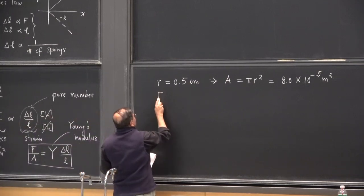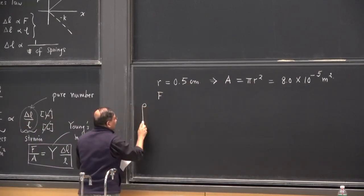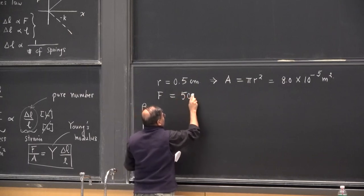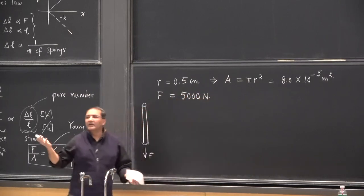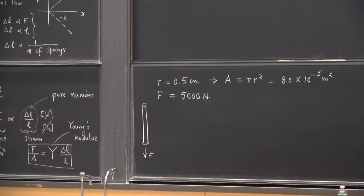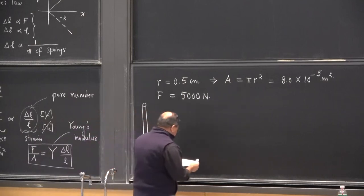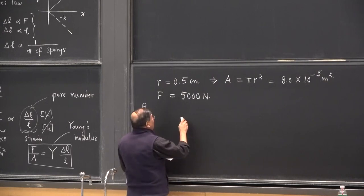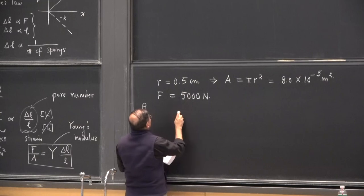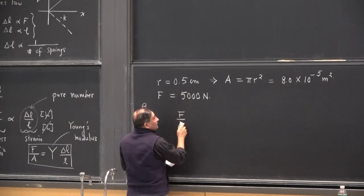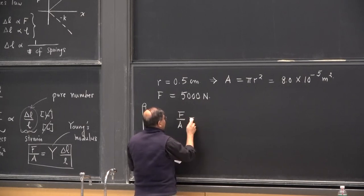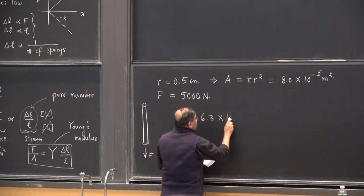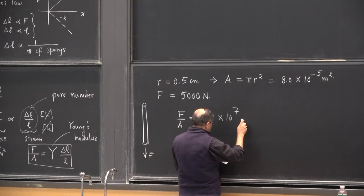Suppose you apply a force — this is a wire, and you apply a large force: 5,000 newtons, which is roughly 500 kilograms. Now let's see what delta L would be for stainless steel. Given what I know, force per unit area — the force is large, the unit area is small, so a thin wire is supporting a large force — the force per unit area comes out to 6.3 times 10 to the plus 7 newtons per meter squared.